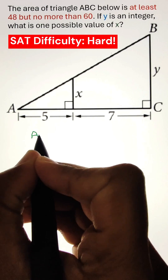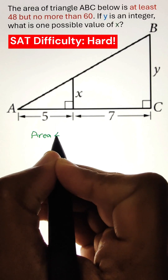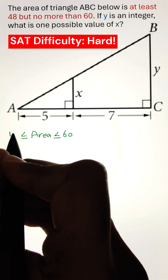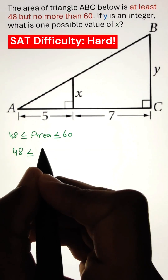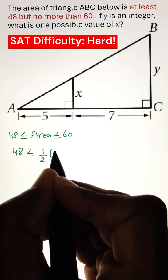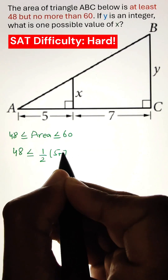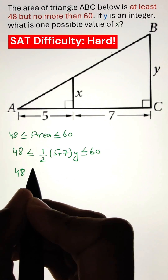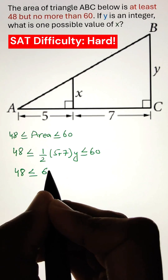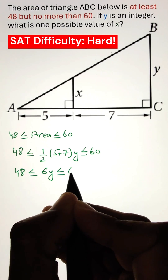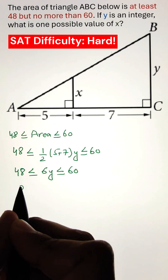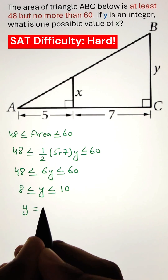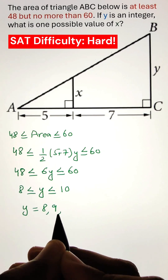If the area of triangle ABC is at least 48 but no more than 60, and Y is an integer as shown in the figure, we can calculate the value of X by first figuring out the potential values of Y, which are 8, 9, and 10.